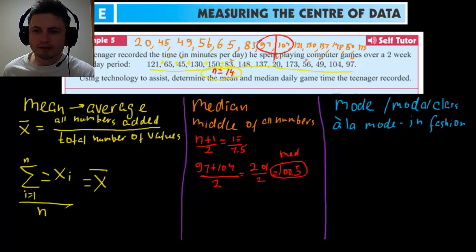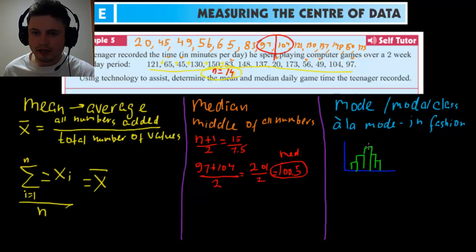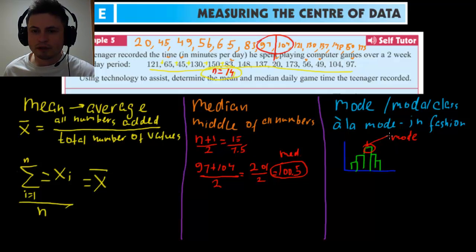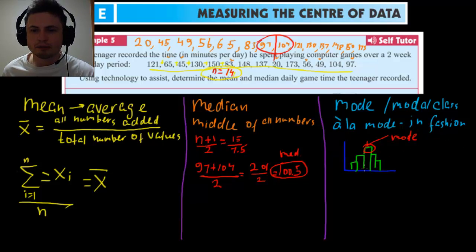The easiest way to find the mode is on your calculator — look for the highest bar on your histogram. That bar is your mode. With frequency tables, it's also very easy because you can just look at the most common repeating number, and that gives you the mode as well.